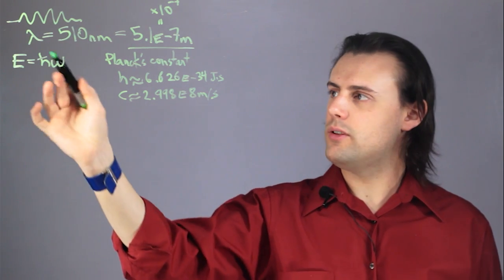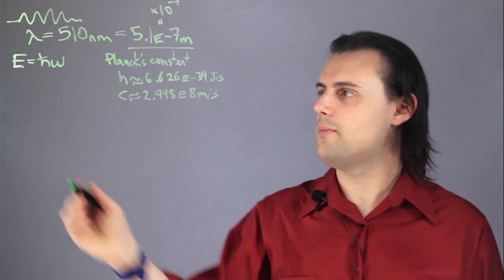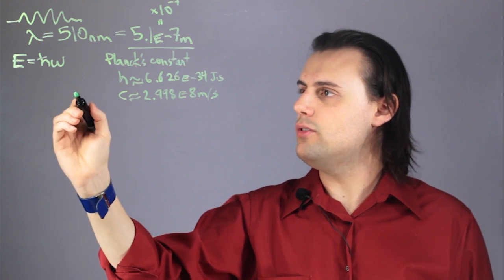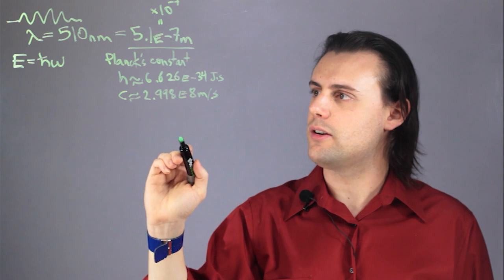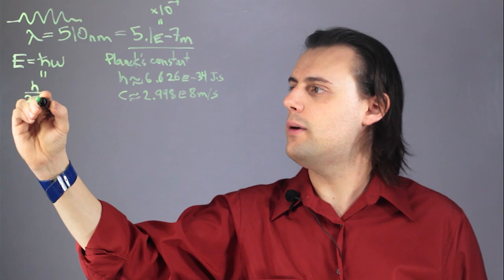So I just want to massage this equation and write it in terms of these three constants. I know that the reduced Planck constant is just the regular constant divided by 2 pi. So this is equal to h divided by 2 pi.